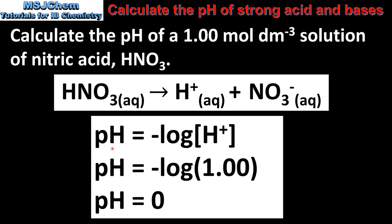Once again we use the equation pH = −log[H⁺]. The hydrogen ion concentration in this solution is 1.00 mol dm⁻³. When we take the negative log of 1.00 we get a pH of 0.